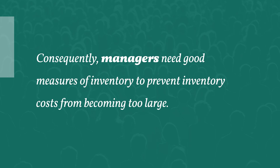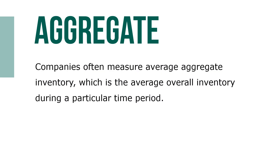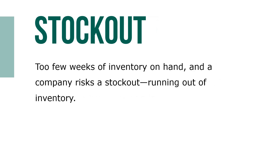Three basic measures of inventory are average aggregate inventory, weeks of supply, and inventory turnover. Companies often measure average aggregate inventory, which is the average overall inventory during a particular period of time. Too few weeks of inventory on hand and a company risks a stockout — running out of inventory.